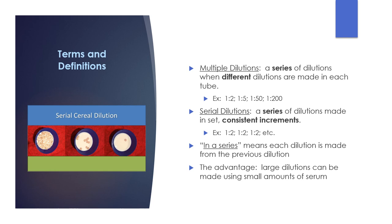Terms you need to know for this lecture are multiple dilutions and serial dilutions, what we mean by 'in a series,' and the advantages of different types of dilutions. Multiple dilutions are a series of dilutions in which different dilutions are made in each tube—for example, a 1:2, then 1:5, then 1:50, and maybe 1:200, all made in the same series. Serial dilutions are a series of dilutions made in set, consistent increments—each tube in the series would be diluted 1:2. The phrase 'in a series' means each dilution is made from the previous dilution. The advantage is that you can make large dilutions using small amounts of serum.